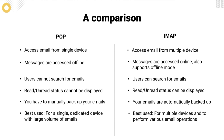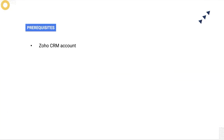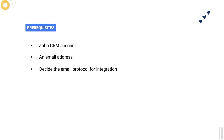Now that we've learned how emails work and the significance of email protocols, let's begin to set up our email account within CRM. Here are a few prerequisites to keep in mind when we integrate our email inbox. Number one, have a Zoho CRM account. Number two, an email address — this should be one you use to interact with your customers and handle your business activities. Number three, decide which protocol to use for integration. It's up to you to decide what protocol you'd like to use when integrating your email with CRM.